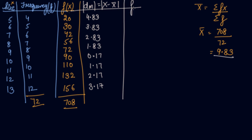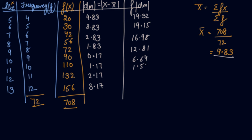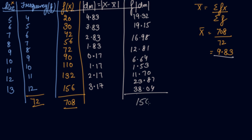Next, multiply each deviation by its frequency. The resulting F×|D| values come out to be: 19.32, 19.15, 16.98, 12.81, 6.64, 1.53, 11.70, 23.87, and 38.04 — each deviation multiplied by its corresponding frequency. Adding all these values gives a sum of 150.04.